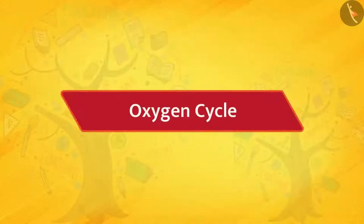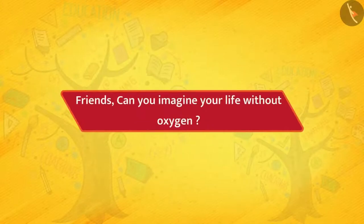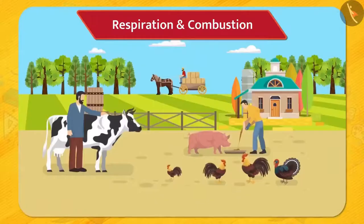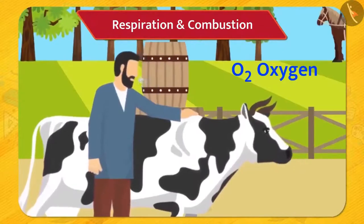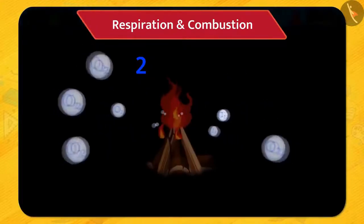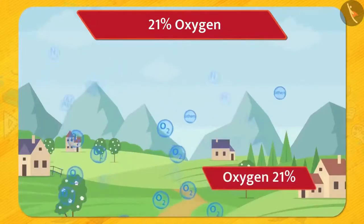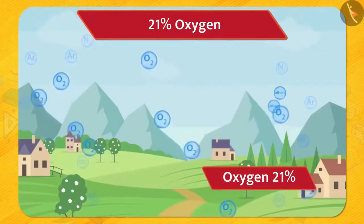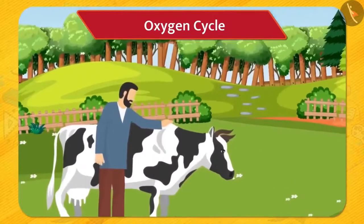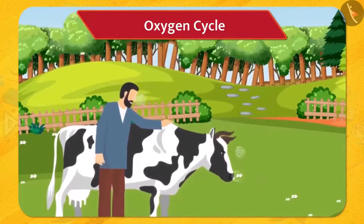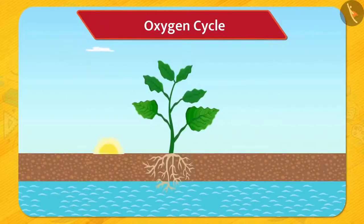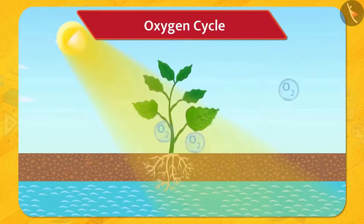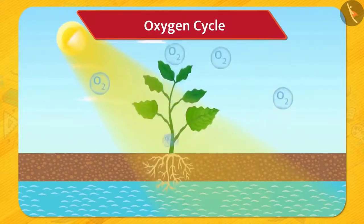Oxygen cycle. Friends, can you imagine your life without oxygen? Impossible — we cannot live even a few minutes without it. Oxygen is necessary for the respiration of living beings and it is also necessary for combustion. Around 21% of the atmosphere is oxygen and it's almost constant. Humans and animals take oxygen through the process of respiration and release carbon dioxide and water vapour. This carbon dioxide and water vapour is absorbed by the plants to prepare their own food and oxygen by the process called photosynthesis.